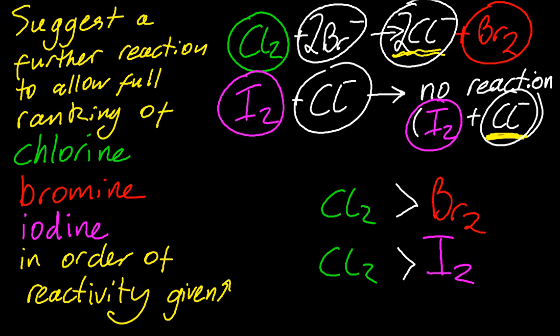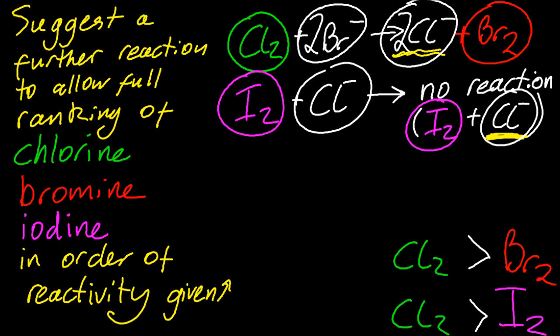So what's the relationship between bromine and iodine? I can't tell from those two equations, so I need to provide another equation that will allow me to determine the relationship. So there are two possible equations that you could choose if you're going to suggest a further reaction. Between bromine and iodine, how are you going to do that? Well, bromine and iodide, or iodine and bromide, just following the pattern that we've seen before.